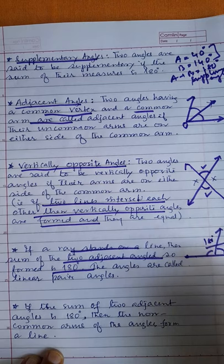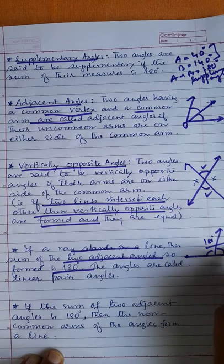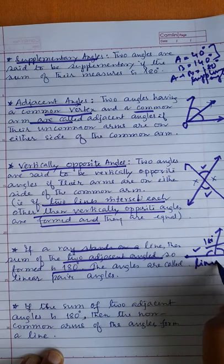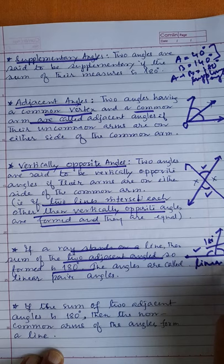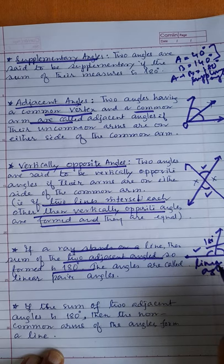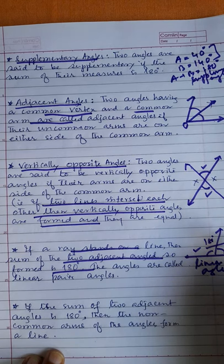In this case, these two angles are called linear pair angles. So if the sum of two adjacent angles is 180 degrees, the angles are called a linear pair.